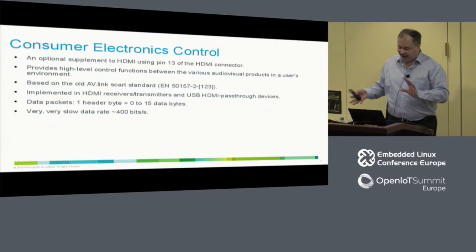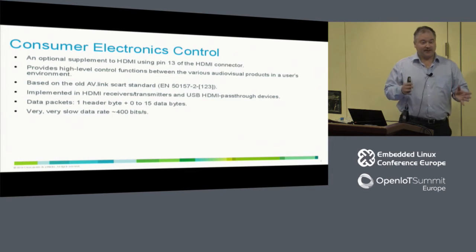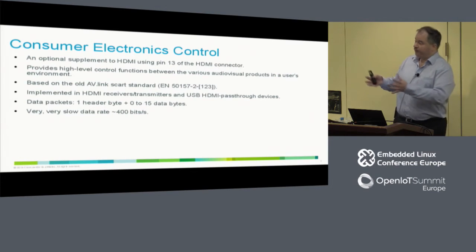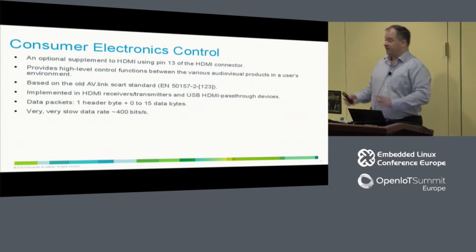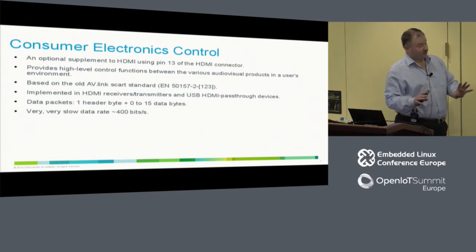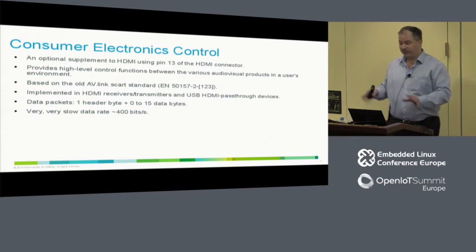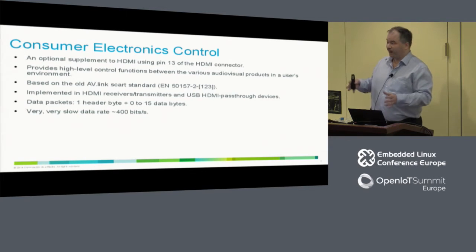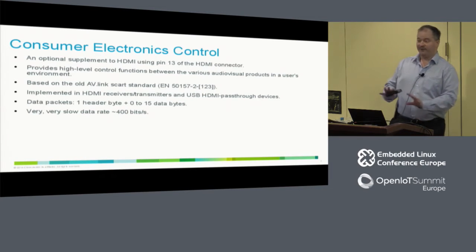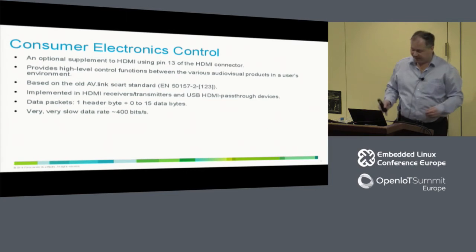You basically have one byte header and then up to 15 bytes of payload. Remember, this is 400 bits per second, so that's about 36 bytes per second — you really don't have a lot of bandwidth available.